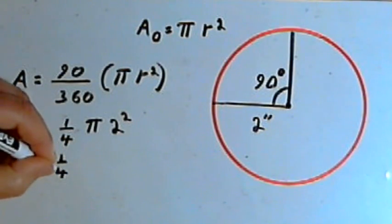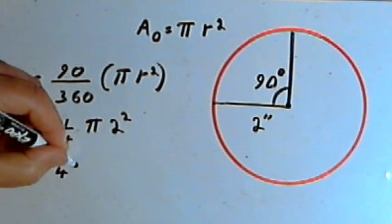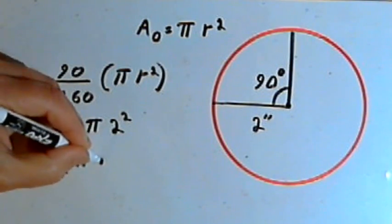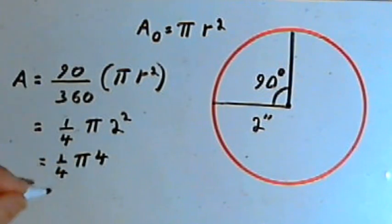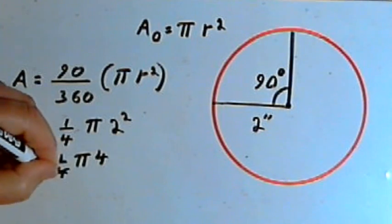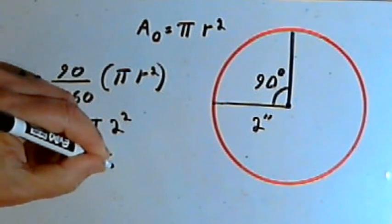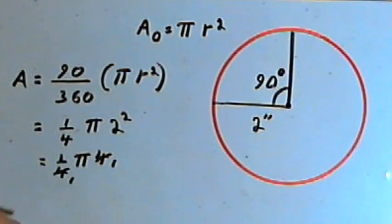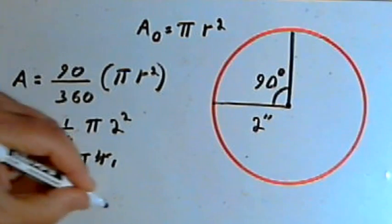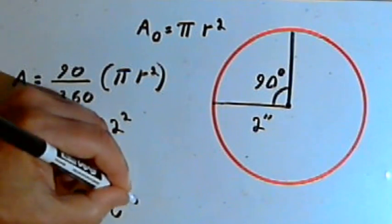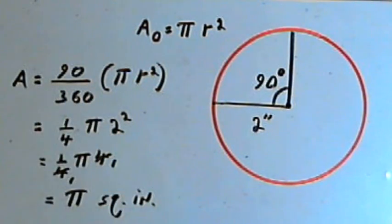That means I'll have 1 quarter pi, 2 squared is 4. And I can simplify that by dividing a 4 out of this denominator and dividing this 4 as well. And that means the area for this sector is going to be pi square inches, since I'm dealing with inches.